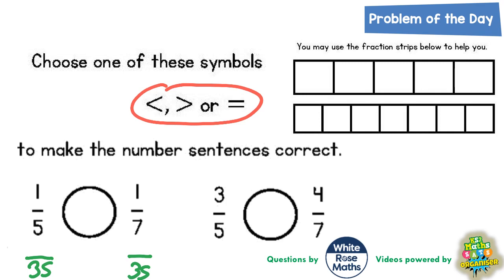Well, to get from 7 to 35 you make it 5 times bigger, so you would also have to make the 1 five times bigger. 1 times 5 is 5, so 1/7 is an equivalent fraction of 5/35.